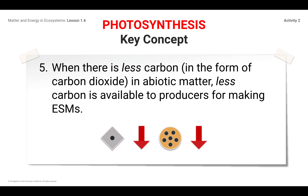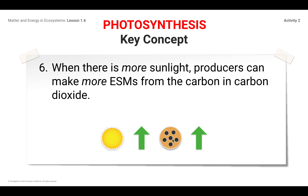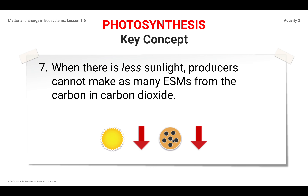Key concept number five is the opposite: when there is less carbon, there is less available for producers in making ESMs. Key concept number six: when there is more sunlight, producers can make more ESMs from the carbon and carbon dioxide. The sunlight is our energy source, and we cannot have a chemical change without a source of energy, so the more energy we have, the more ESMs are available. And then just the opposite — key concept number seven: when there is less sunlight, producers cannot make as many ESMs from the carbon and carbon dioxide.